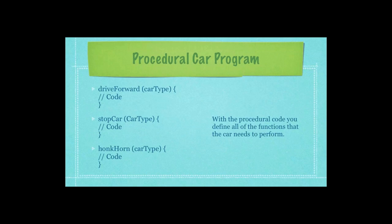Here's an example of procedural programming that's trying to emulate a car. All cars drive forward, so the procedural programming goes in and creates a drive-forward function. Also, all cars stop, hopefully, and also they honk their horns. And so, the procedural programming goes in and creates these three functions to emulate a car.